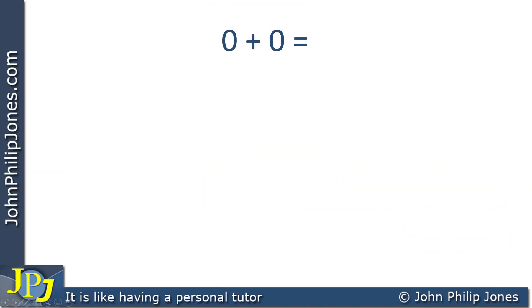To be proficient at adding binary numbers, you need to memorize the following. 0 plus 0 equals 0. 0 plus 1 equals 1. 1 plus 0 equals 1. 1 plus 1 equals 2, which is written down as 1, 0 in binary. And 1 plus 1 plus 1 is 3, but that's written as 1, 1 in binary.